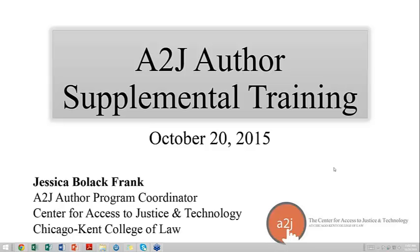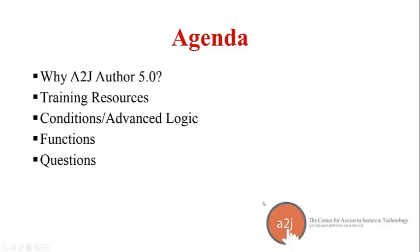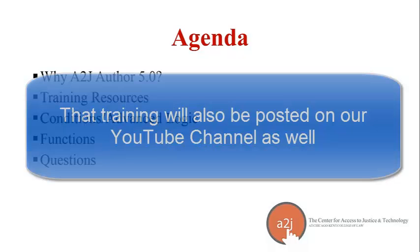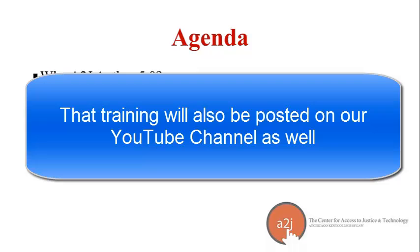This is our supplemental training to the Law Help Interactive online training series. Today we're going to talk about why use A2J Author 5.0. We'll talk about training resources, conditions, advanced logic, functions, and then we'll have time for questions. We also have a training next week on supplemental A2J things, including repeat loops and exiting. So let's get started.